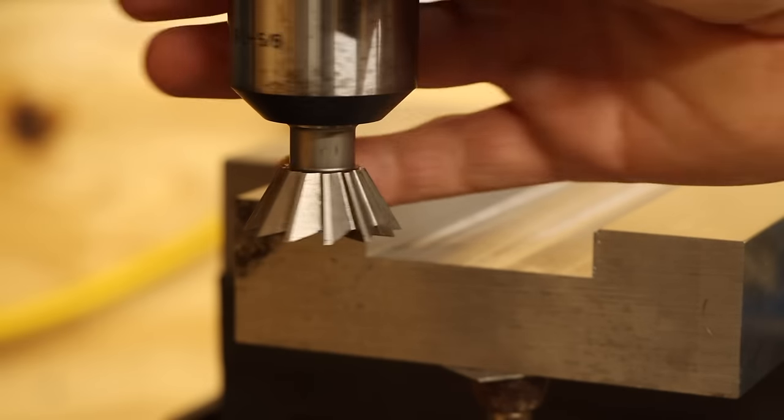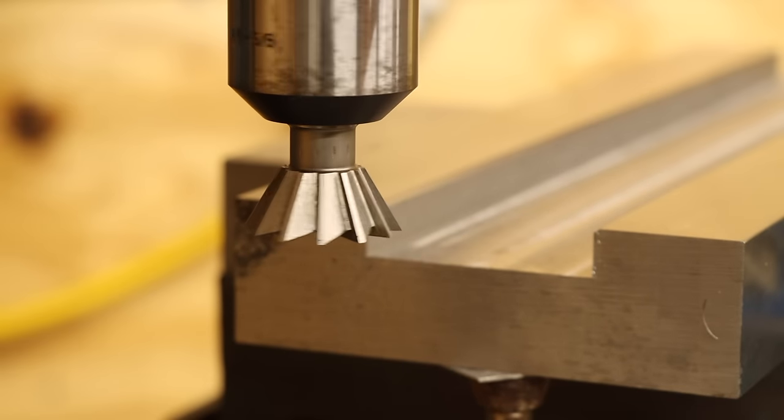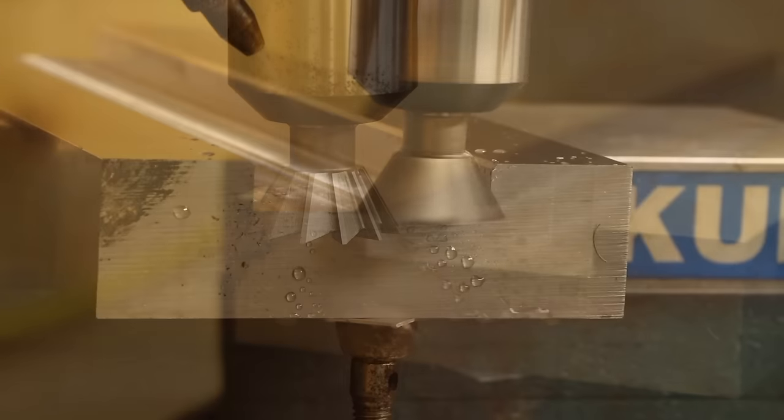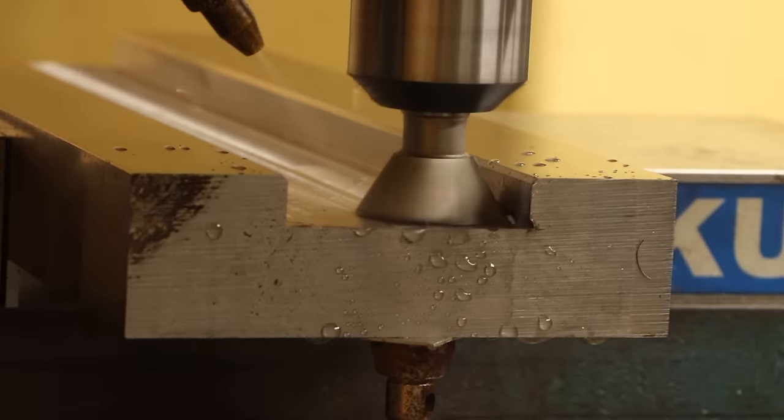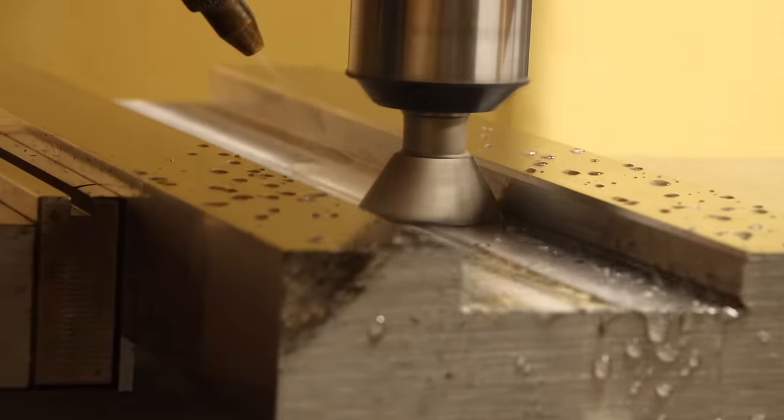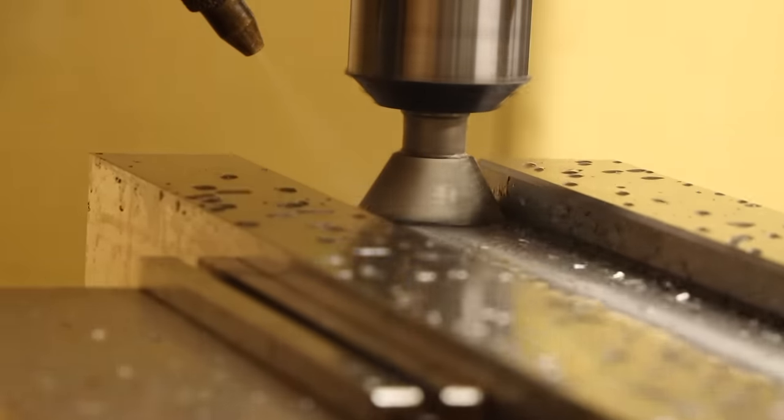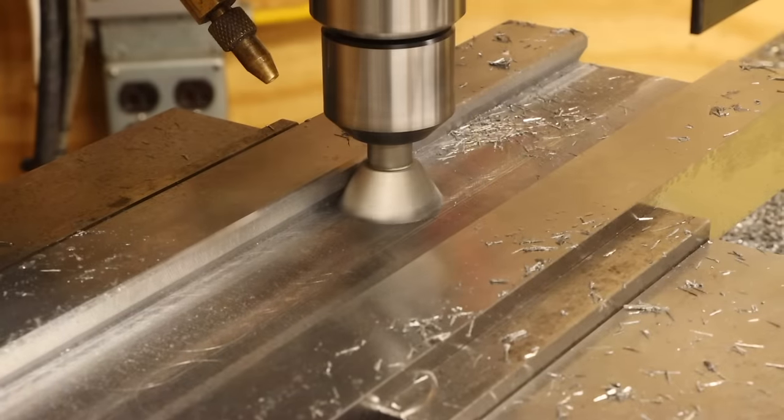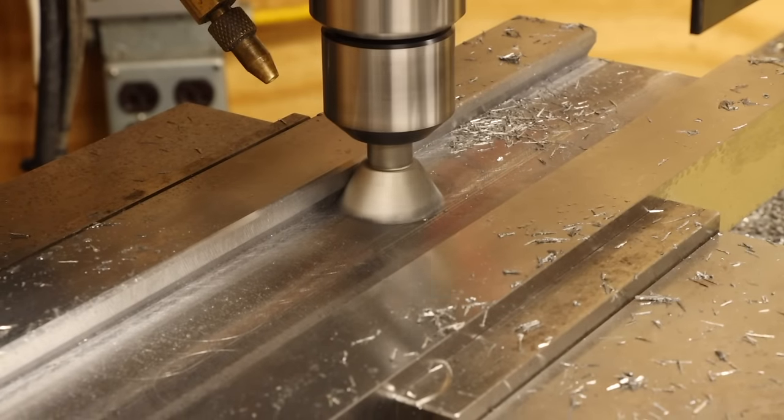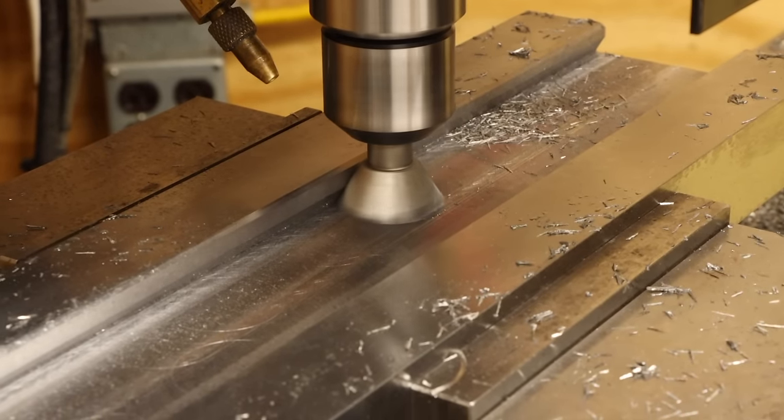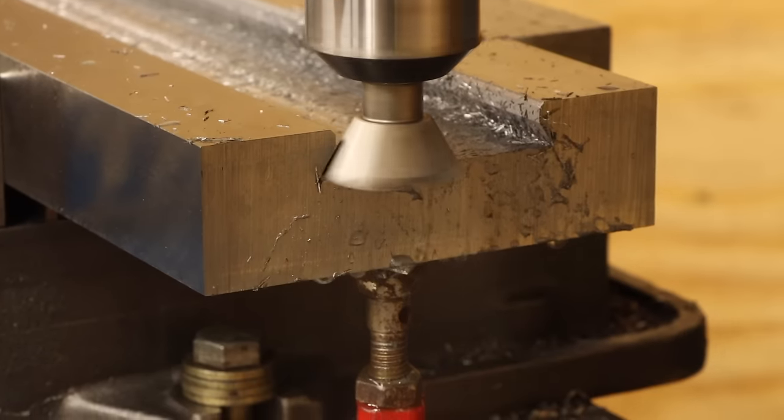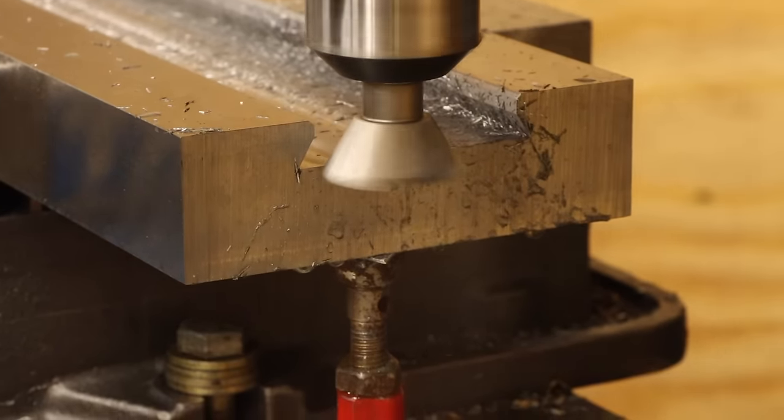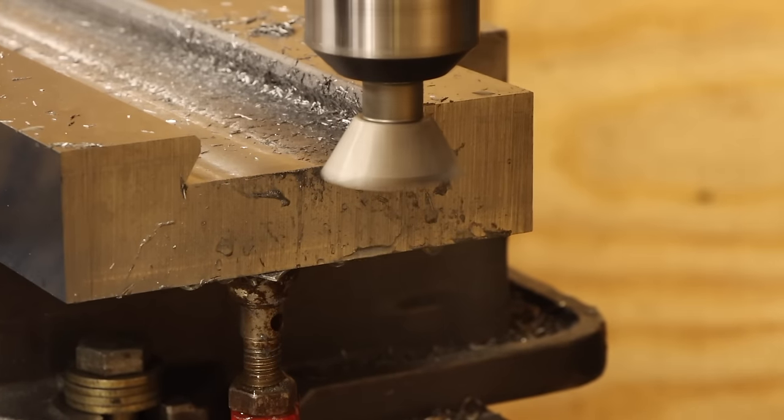I'll start with a fairly modest depth of cut and start working my way back and forth taking passes along each side. One thing I notice is the deeper I go, the noisier the tool gets. I imagine this has to do with the variable cutter diameter. What's an appropriate cutting speed at the larger diameter tip is too slow for the smaller diameter near the top. But there isn't really a way around this problem, so I'll just have to make small adjustments to the table feed to keep the chatter to a minimum.